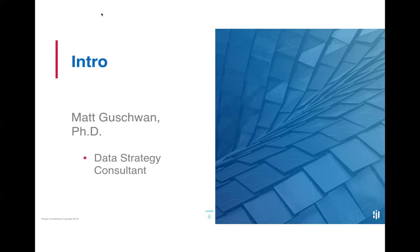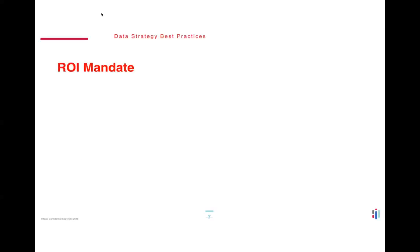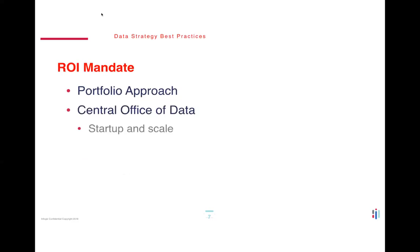In the few minutes I have here today, there's one point I'd like to emphasize. Data strategy should not be driven by controls or governance or barriers around data. The goal in 2019 needs to be to remove constraints in order to use data to create value for the business. With that goal in mind, it's vital to take an ROI perspective on data — thinking about each data project as an investment that has risk and a rate of return. The Office of Data should aim to create a diversified portfolio of data project investments to balance risk and return over the short, medium, and long term.